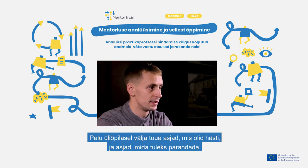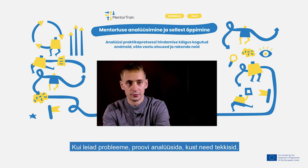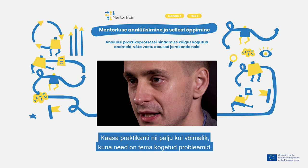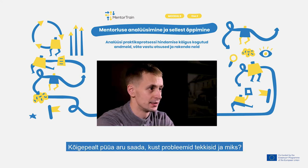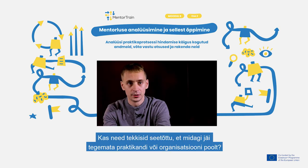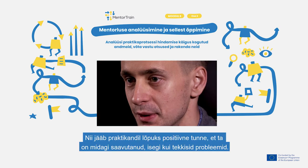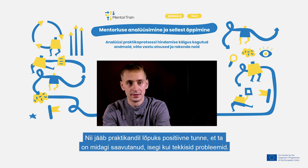Ask the student to bring out things that were good and things that should be improved. If you find problems, try to analyze where they arose from. Involve the apprentice as much as possible since these are the problems that he or she experienced. First try to understand where the problems came from and why — whether they started because of something not done by the apprentice or by the organization. Make a plan with the apprentice on how to solve it and try to implement it the next time. This way the apprentice has a positive feeling and a sense of achievement in the end, even though there were problems.